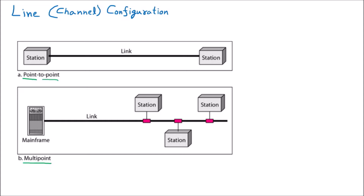Whenever there is a station — let's suppose this is a computer C1 — it is communicated with another computer, which we can also call a station or terminal. These names are the same. They are connected with a single link, so a single dedicated line is there by which they are communicating. This is called the point-to-point connection.